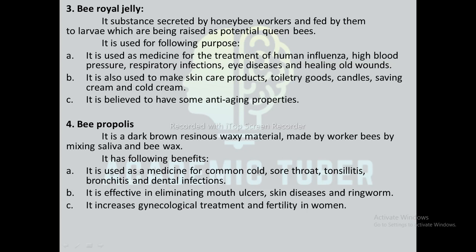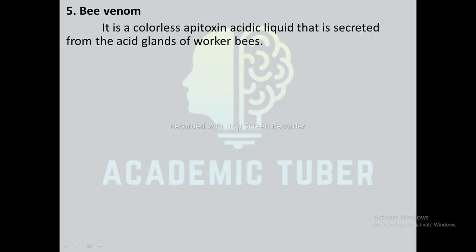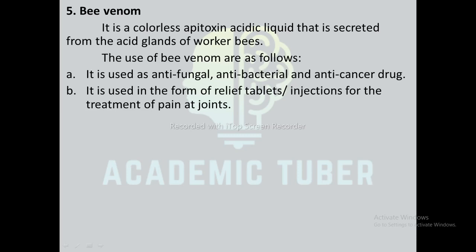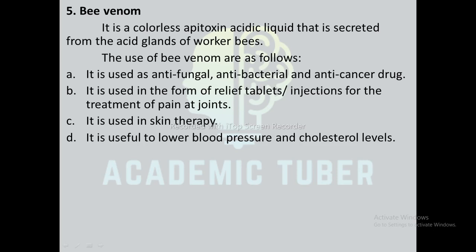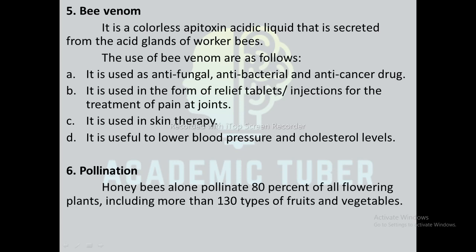Bee venom is a colorless, acidic, toxic liquid secreted from the acid glands of worker bees. It is used as an anti-fungal, antibacterial, and anti-cancer drug. It is used in the form of relief tablets or injections for treatment of joint pains and in sting therapy. It is also used to lower blood pressure and cholesterol levels. Honeybees also pollinate 80% of all flowering plants, including more than 130 types of fruits and vegetables.